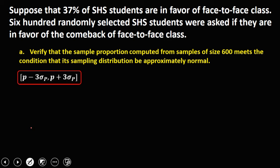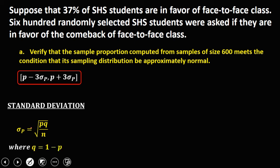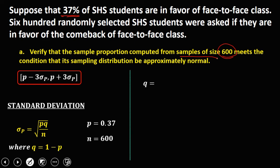Using the formula, we first solve for the standard deviation: the square root of P times Q over N, where Q equals 1 minus P. From the given, P is 37%, or in decimal 0.37, and N, the sample size, is 600. So Q equals 1 minus 0.37, which gives Q = 0.63.